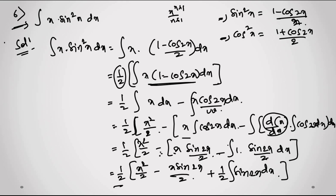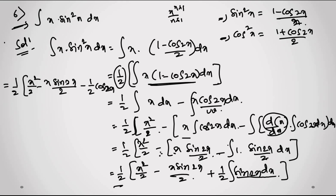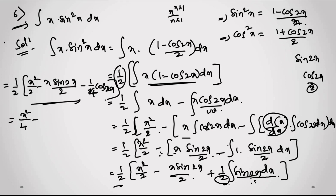Multiplying through by 1/2, the final answer becomes: x²/4 − x·sin(2x)/4 − cos(2x)/8 + c. This is the answer for question 6.